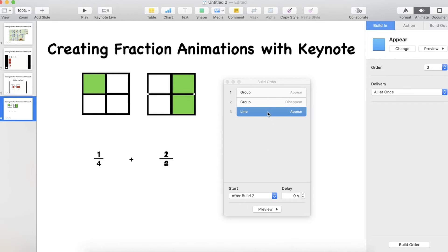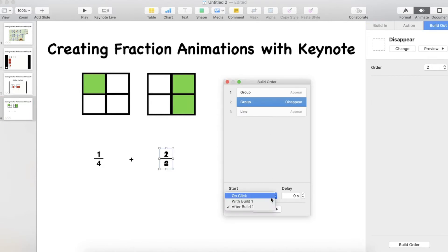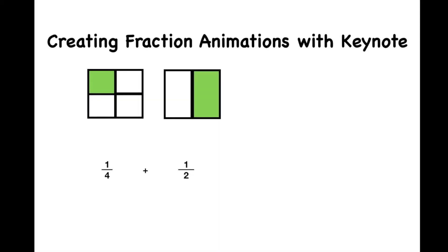This one is actually after build 2. I'm going to make it with build 2. So now they should all happen together. Let's preview that and see what happens. It's turned one half into two quarters.